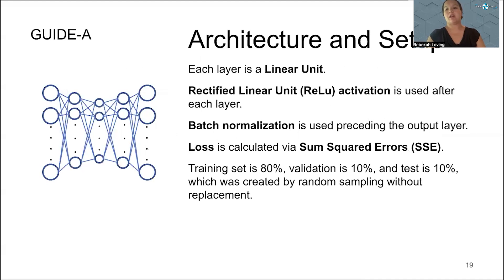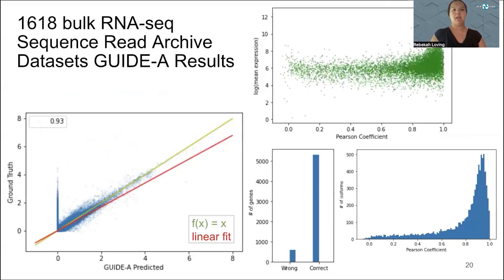The autoencoder that we used is here. Each layer is a linear unit. Rectified Linear Unit (ReLU) activation is used after each layer. Batch normalization is used preceding the output layer. Loss is calculated via Sum Squared Errors (SSE). Training set is 80%, validation is 10%, and test is 10%, which was created by random sampling without replacement.